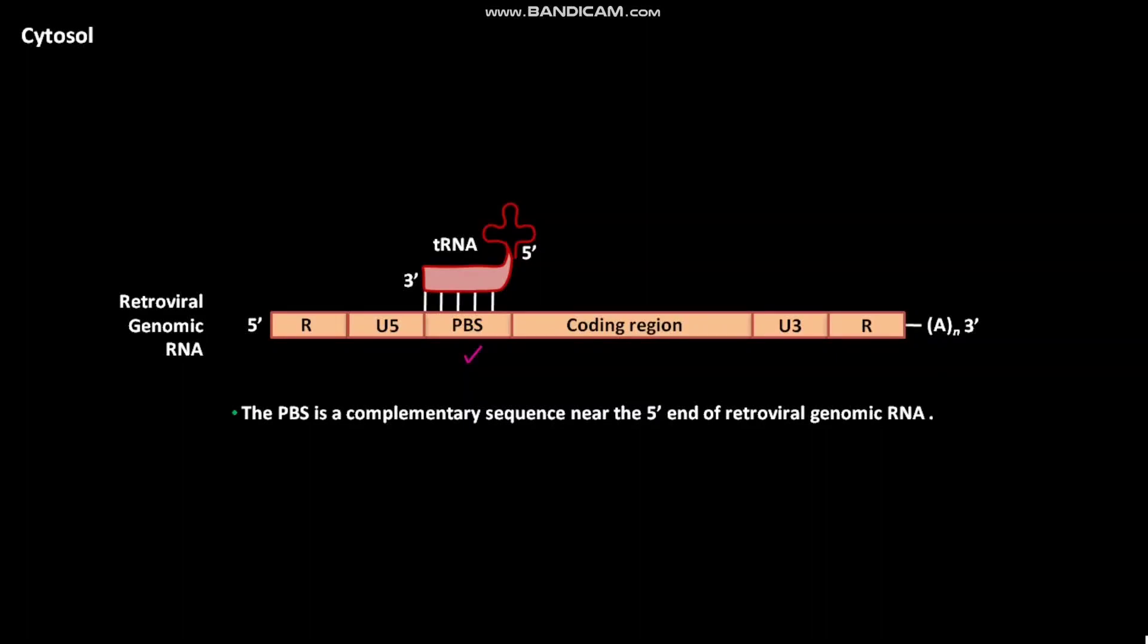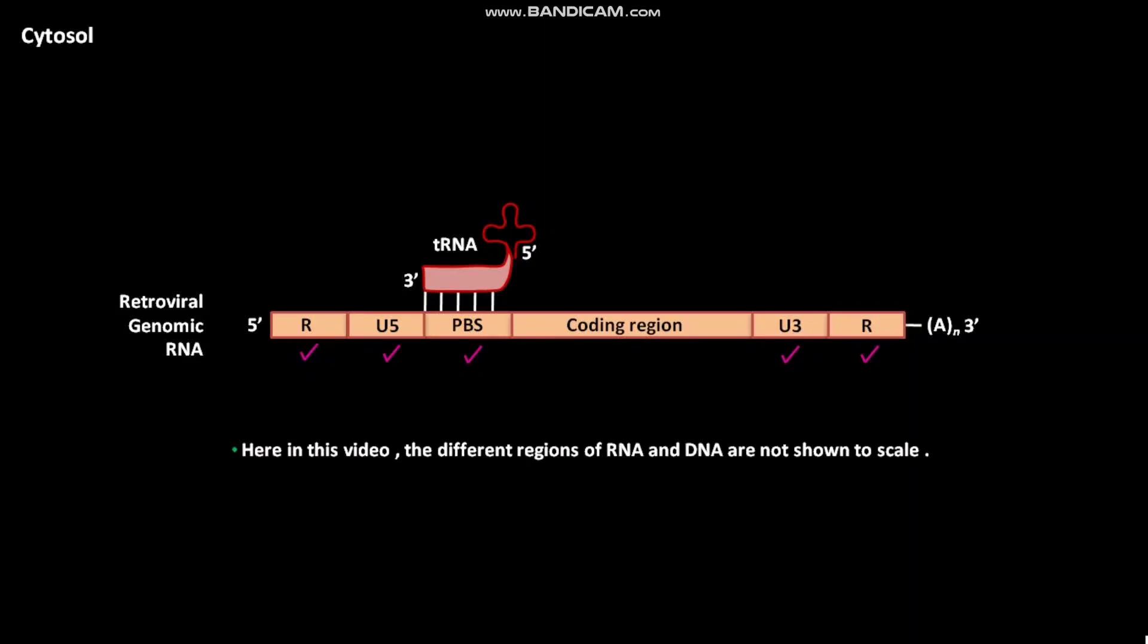The retroviral genomic RNA has a short direct repeat terminal sequence or R sequence at each end. Besides R and PBS sequence, the retroviral genomic RNA has two unique sequences called U5 and U3. Here in this video, the different regions of RNA and DNA are not shown to scale. The PBS and R regions are actually much shorter than U5 and U3 regions. The central coding region is very much longer than the other regions.